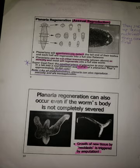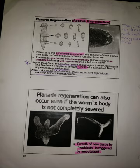How planaria regenerate is through asexual reproduction. Planarians will spontaneously detach the tail end of their bodies, and each half will regenerate into a full-size flatworm. Planarians can be cut either transversally or dorsally, and most will regenerate into a full-size worm. A super cool fact: the smallest piece of planarian to ever regenerate in a lab into a new planarian was 1/279th of a planarian — approximately only 10,000 cells.